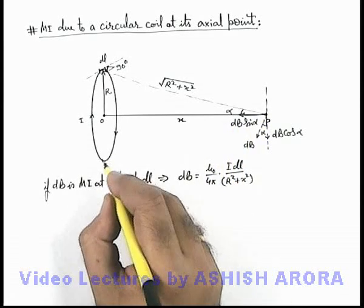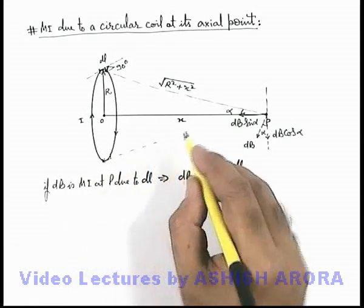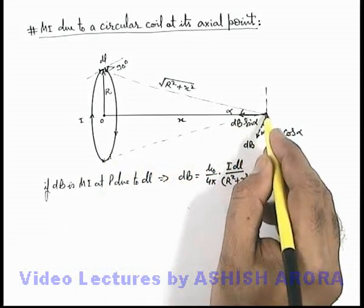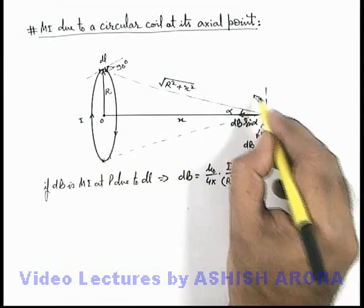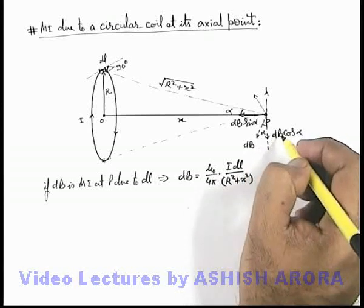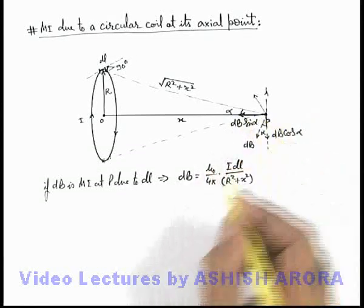Because if we consider an element at the bottom of this coil, the magnetic induction due to this element at point p can be given in this direction, so its vertical component will get cancelled out and component along the axis will be added up.